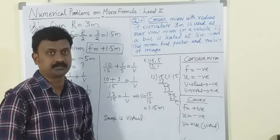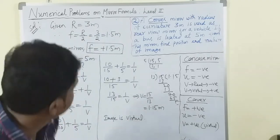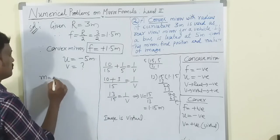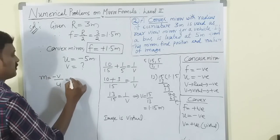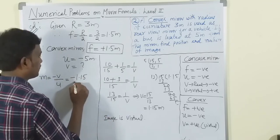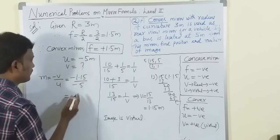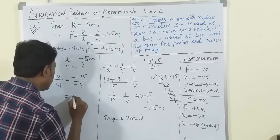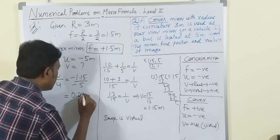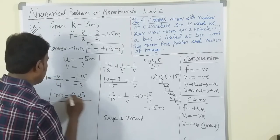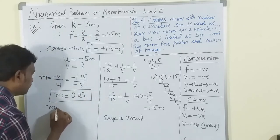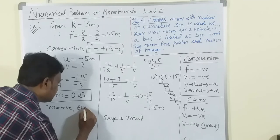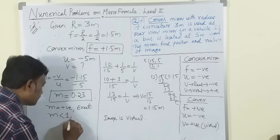Now for magnification: m = -v/u = -(1.15)/(-5). The two negatives give a positive, so m = 1.15/5 ≈ 0.23. Since m is positive, the image is erect, and since m is less than 1, the image is diminished.